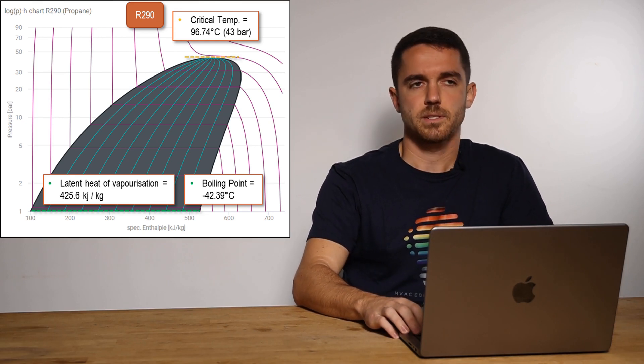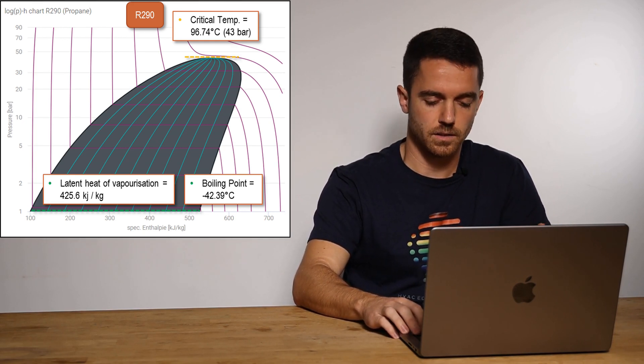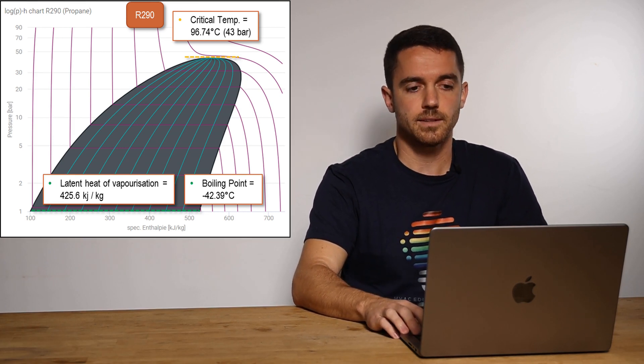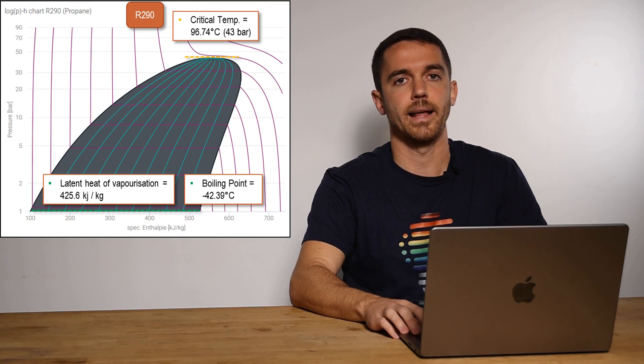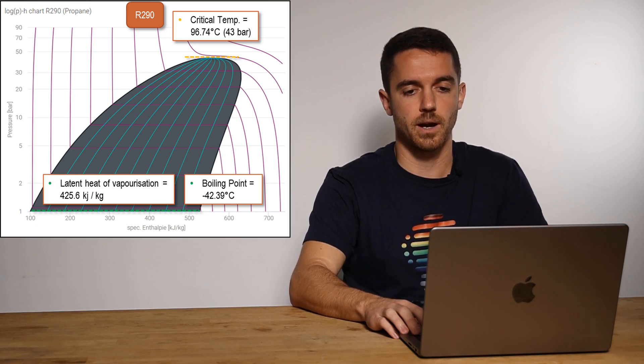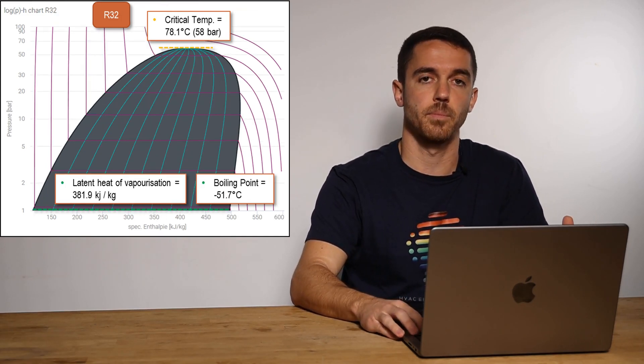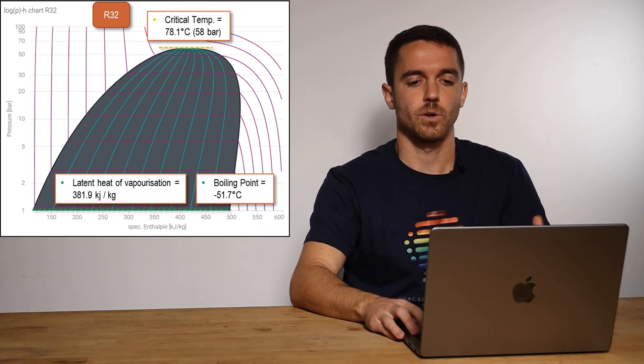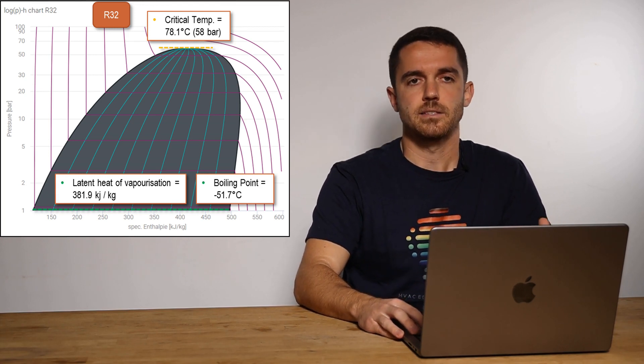These numbers maybe are not so clear when looking just on one chart, but if we compare R32 and R290, we can see that with R290 we have higher temperature and lower pressure. So we have 43 bar and 96 degrees Celsius, and on R32 we have 58 bar and 78 degrees Celsius. This means that we cannot condense on high temperature on R32 because limit on all devices is around 40 bar.